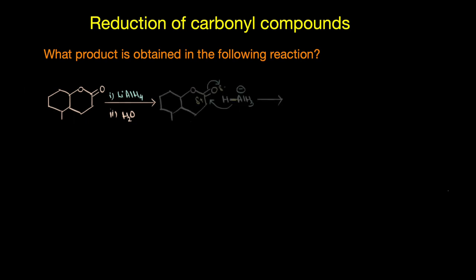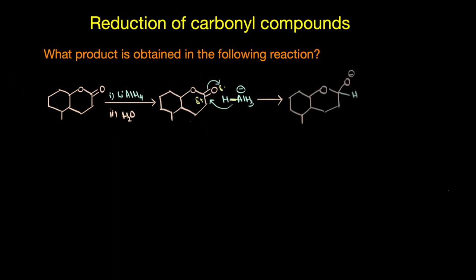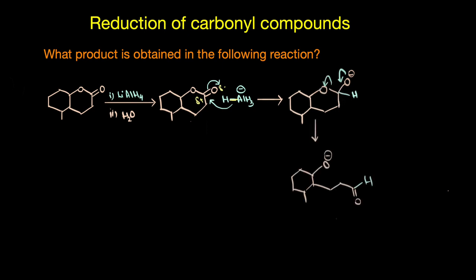The electron pair in the Al–H bond attacks the C=O group because the C=O bond is polar — carbon has a partial positive charge and oxygen has a partial negative charge. The hydride ion attacks the electrophilic carbon atom, giving an intermediate. In the next step, elimination takes place: the C=O is restored, the C–O bond breaks, giving an O⁻ and an aldehyde group.